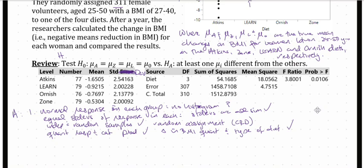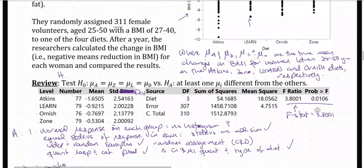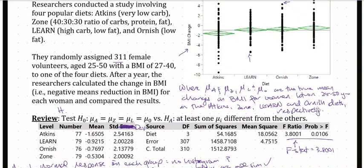We've already stated our hypotheses, so the next thing we need to do is get our test statistic and p-value. Our test statistic and p-value are provided in the ANOVA table. Our F-statistic is 3.8001, meaning we have 3.8 times as much explained variability when we use the type of diet to predict the change in BMI as we do unexplained variability. That's not that big, but it makes sense — our sample means are not that different from each other, and the variability within each group is very large, so the difference between our group means is small relative to within-group variability.